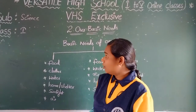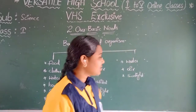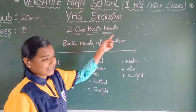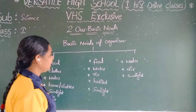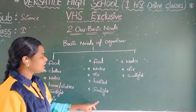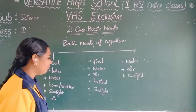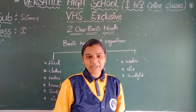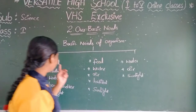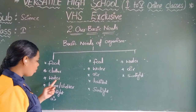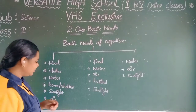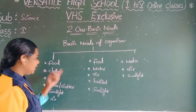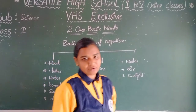Today is the second lesson: Our Basic Needs. Our basic needs are the basic needs for every organism. So what are the basic needs we want? Food, clothes, water, home or shelter, sunlight, and air. These are the main basic needs for humans.